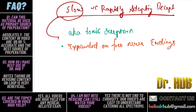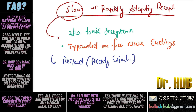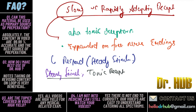Slow/tonic receptors respond to the steady stimulus. With a steady stimulus, the tonic receptors keep responding steadily.